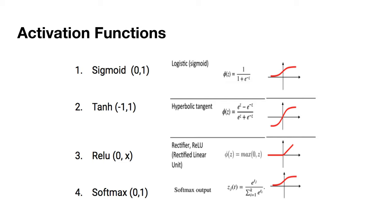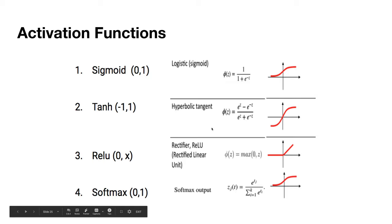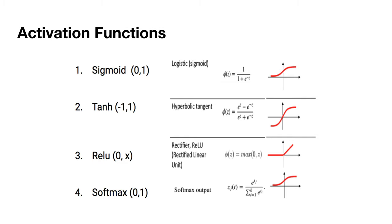There are many activation functions. You have the product of input times weights, and then a threshold function you choose based on your need. Sigmoid is used for binary classification or when you want to produce a probability output. You also have hyperbolic tangent (tanh), ReLU, and softmax — softmax is used for multi-class classification problems where you have more than two classes.